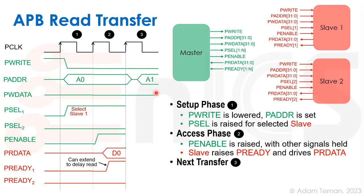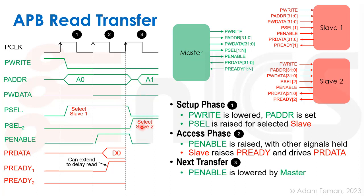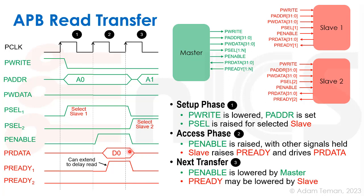The slave can hold PREADY low to extend the read operation until it's ready. Once finished, the master can change to a different address, lower PENABLE, change PSEL, and PRDATA is released from the bus while PREADY goes low. That covers the simple APB read and write transfers, showing how the ACK is embedded within the PREADY signal.